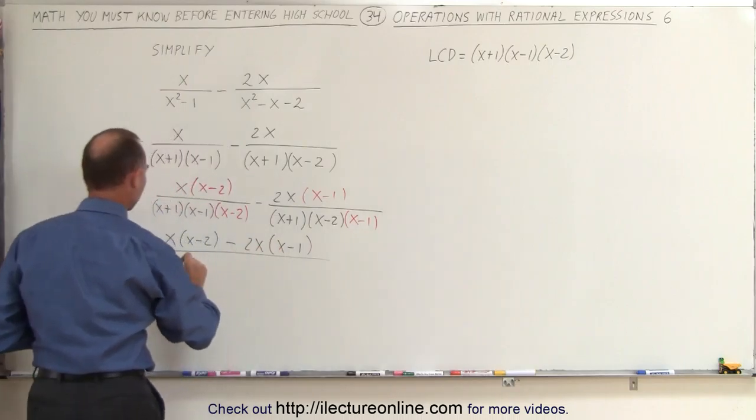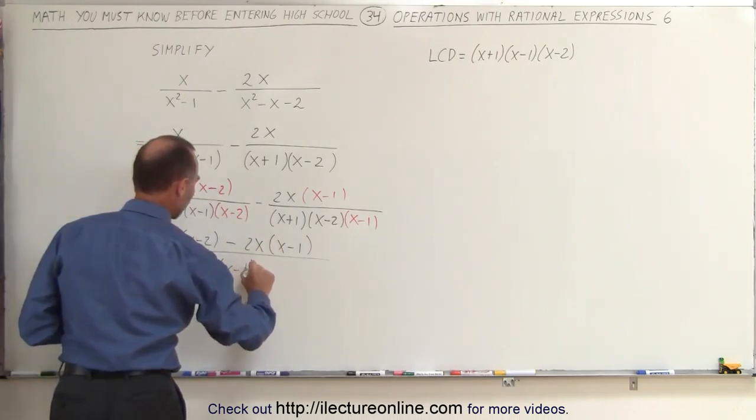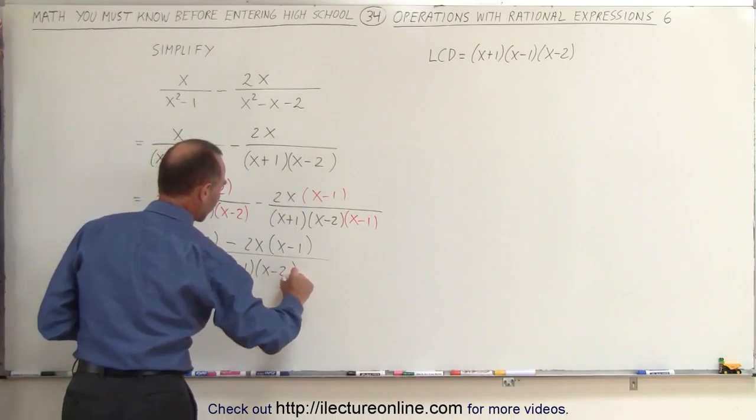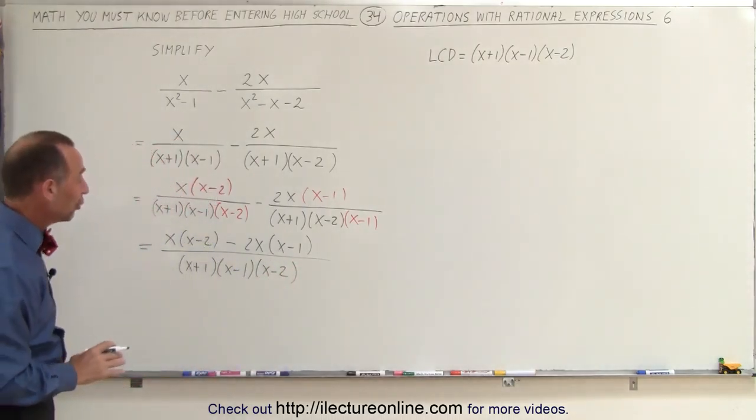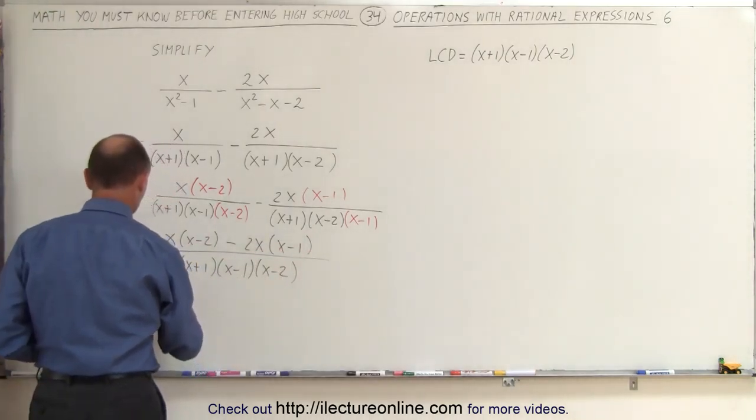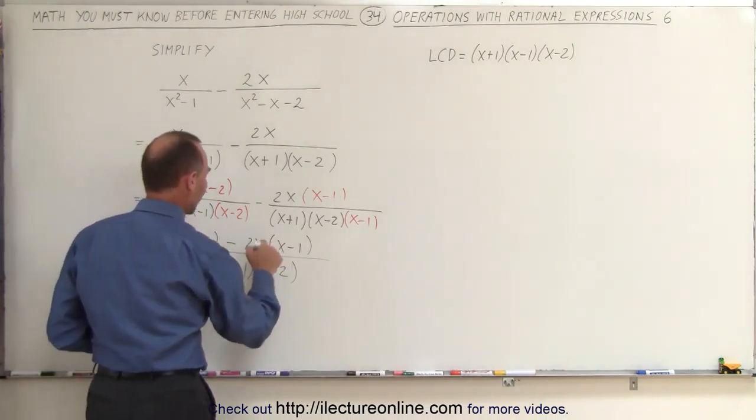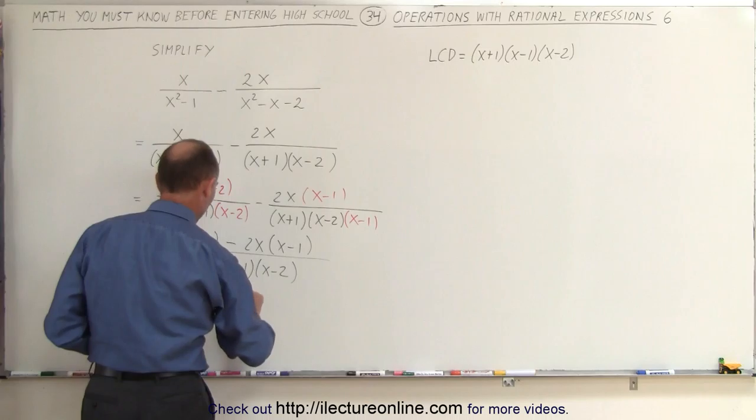So this can now be written as x times x minus 2 minus 2x times x minus 1, all over the same common denominator of x plus 1, x minus 1, and x minus 2. Now we just have to simplify the numerator and see if there's anything I can cancel out.